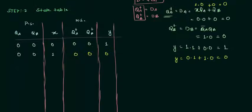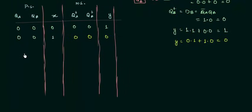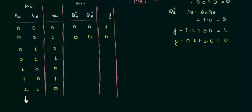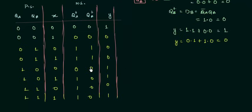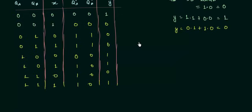In the same way we fill in the remaining six cases for all combinations of QA, QB, and X: 0,1,0 then 0,1,1 then 1,0,0 then 1,0,1 then 1,1,0 and 1,1,1. After completing all calculations for next state and output, the state table is now complete. We can now move to step number 3.